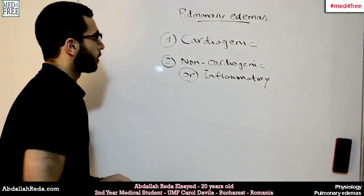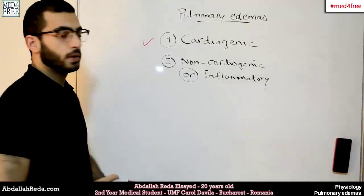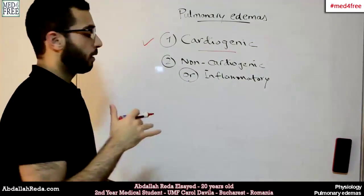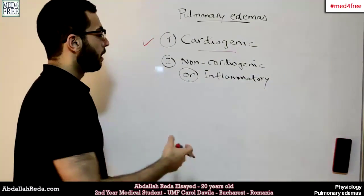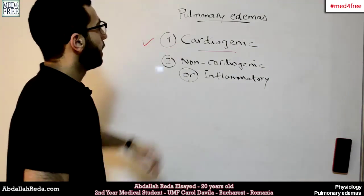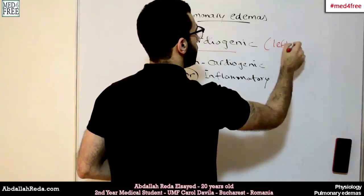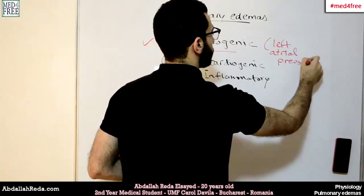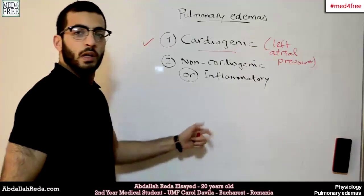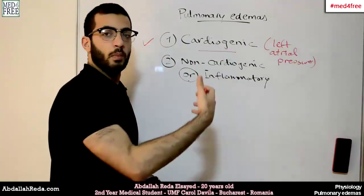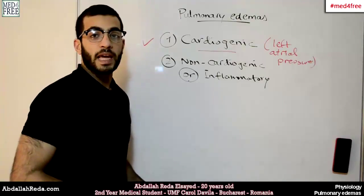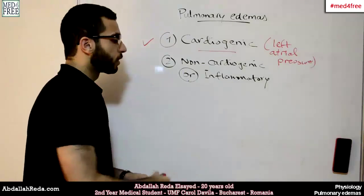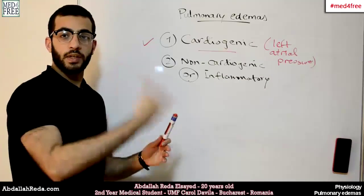Why are they called so? The first one, the cardiogenic edema, is called so because the main cause of this edema is high pressure inside the capillaries of the lung. And what would cause this? A raised left atrial pressure could pump more blood into the pulmonary arteries, and thus increase the pressure inside the capillaries of the lung. A higher pressure inside the capillaries would increase the filtration force.